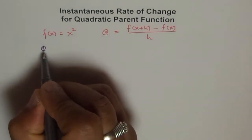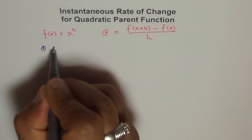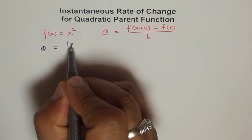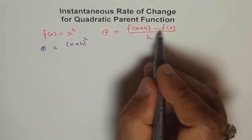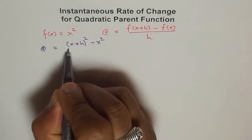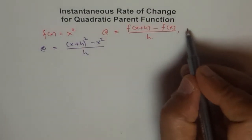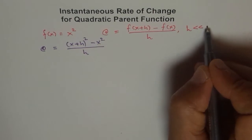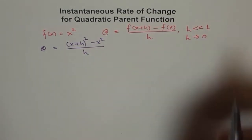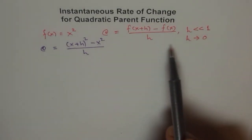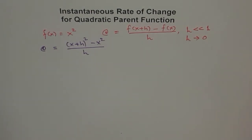So the instantaneous rate of change for this function equals f(x+h), meaning we replace x with x+h. We get (x+h)² minus x² over h. Here, h is something very, very small compared to 1, and h actually approaches 0 — it is like 0.001. So h² will be very, very small and can be neglected for most practical purposes.